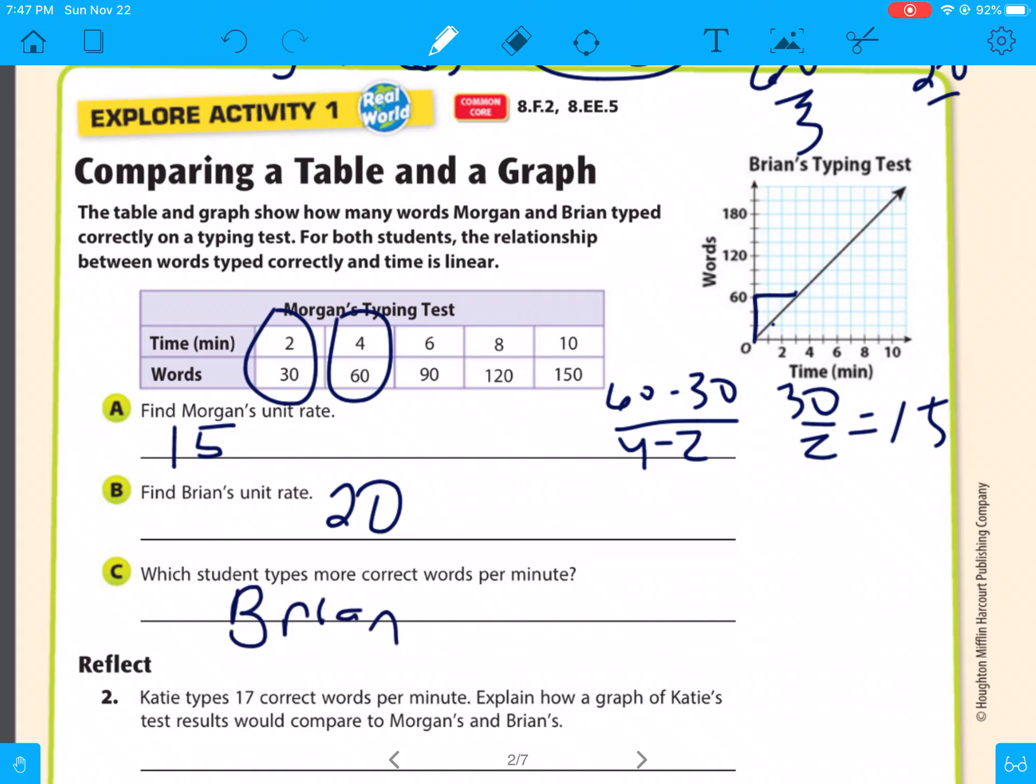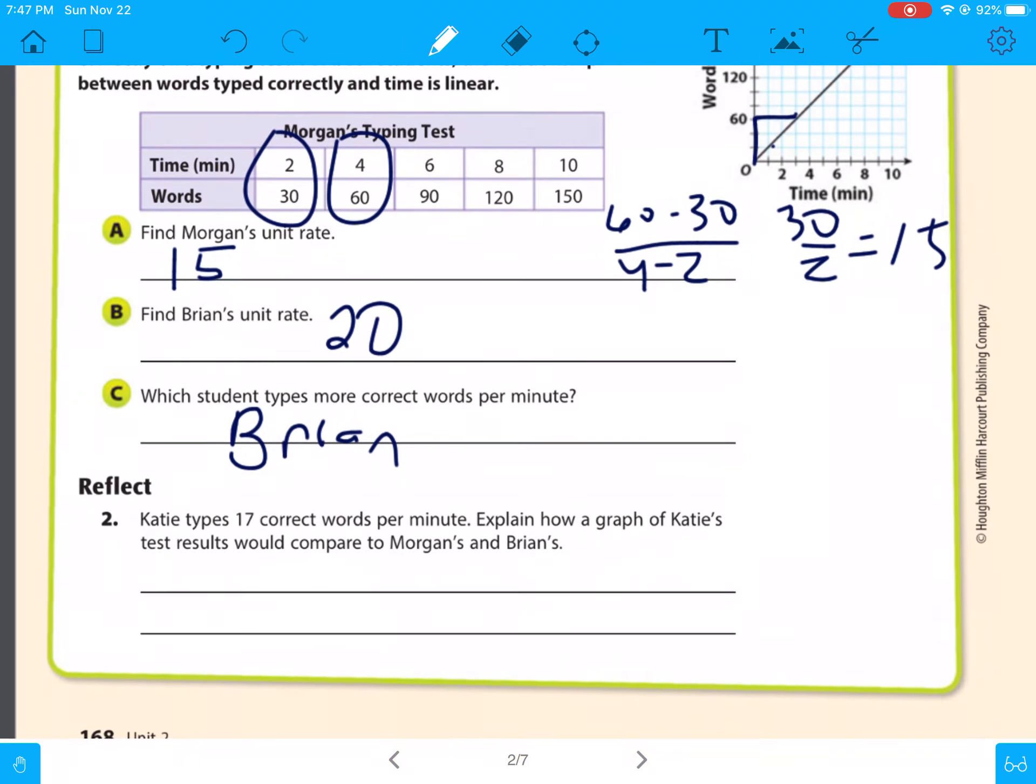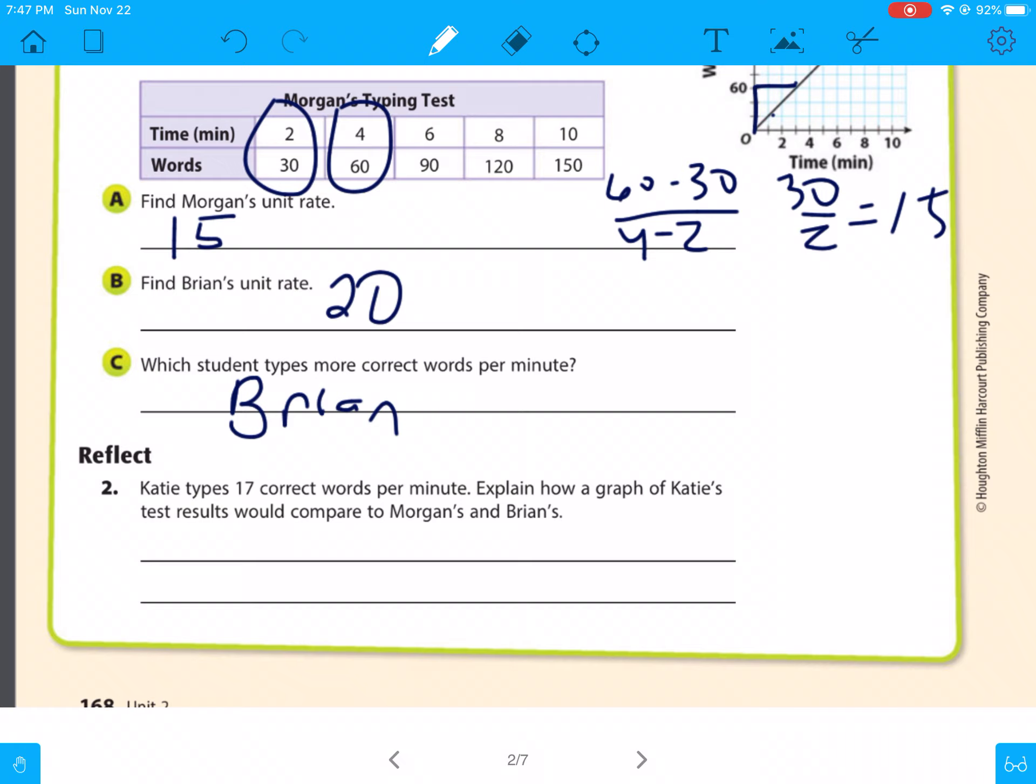Now, for reflect, for number 2, Katie types 17 words per minute. Explain how a graph of Katie's test results would compare to Morgan's and Brian's. It would be right between them, since it's greater than 15 and less than 20. So it's going to be between both.